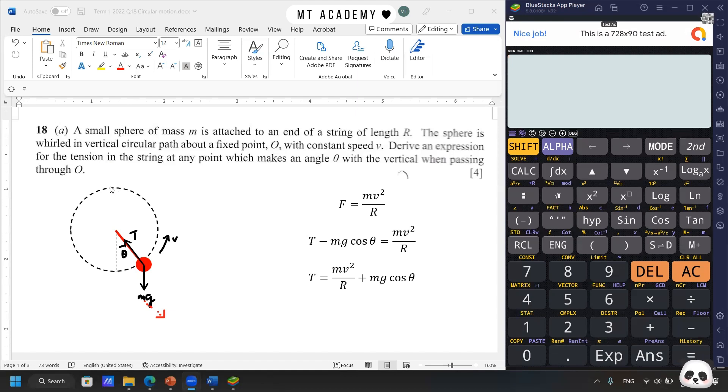And then when it goes to the top, we have cos 180°, which is equal to negative 1. So here at the top, we have mv² over R minus mg. So this is where the tension T is minimum. This would be the equations that describe the change in the tension at any point in the circular path.